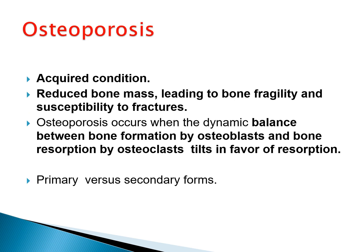We will start with osteoporosis. Osteoporosis is an acquired condition, meaning it is not familial or inherited. It is related to environmental factors and mostly to the aging process. The definition of osteoporosis is reduced bone mass, leading to bone fragility and susceptibility to fractures.